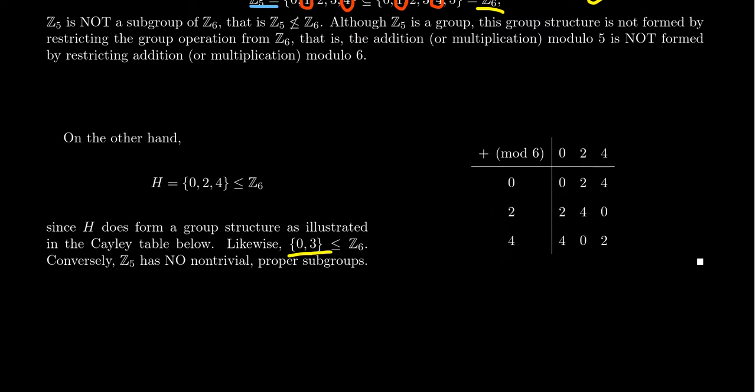Another example, what if you take the set 0 and 3? We could do a similar type of thing. 0 plus 0 is 0. 0 plus 3 is 3. And 3 plus 3 is 0. The restriction of addition mod 6 to this set 0, 3 gives us a binary operation. It'll be associative because it was already associative in Z6. You have an identity, and 3 is its own inverse. So we have all the group axioms.